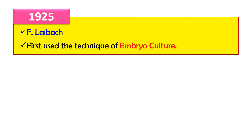In 1925, the technique of embryo culture was given by F. Leibach. In this technique, as the name indicates, we take the embryo at various developmental stages and culture them in a medium. We perform embryo culture because in some plants the embryo cannot grow into a complete plant, or due to some disease the embryo gets terminated. By culturing the embryo, a complete plant can be grown.